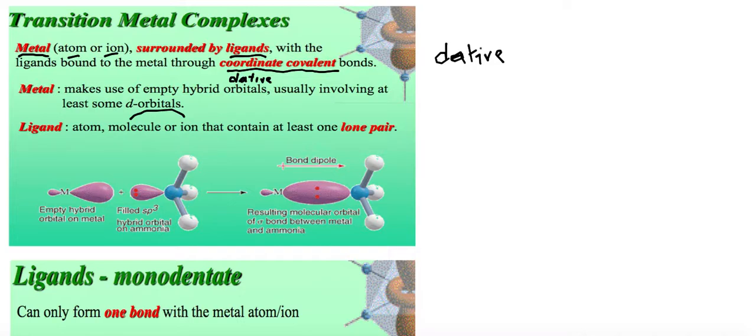This means there is empty space in the d orbital which the ligand, which has lone pairs, would be able to fill up.